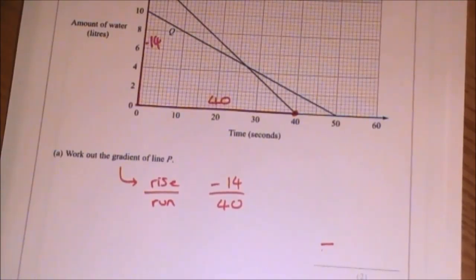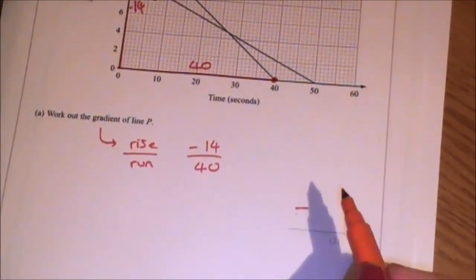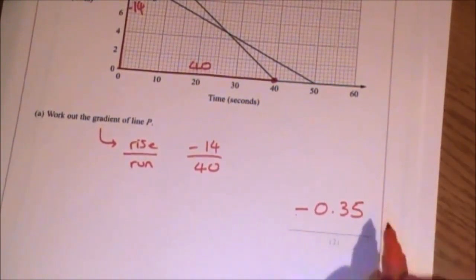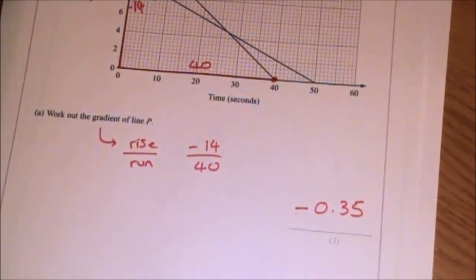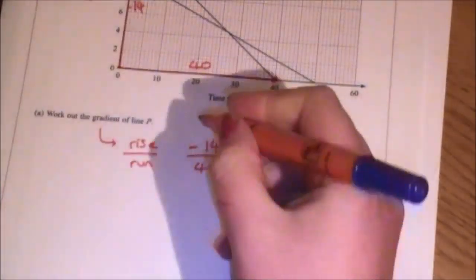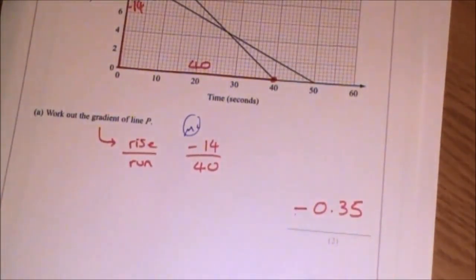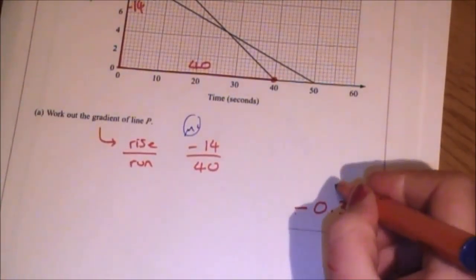Remember, this is a calculator paper. So it's negative 14 divided by 40 and that's going to give you negative 0.35. With regards to how those marks are allocated, you get one mark for the right angle triangle and for showing that it's the rise over the run, and you get the second mark which is your accuracy mark.